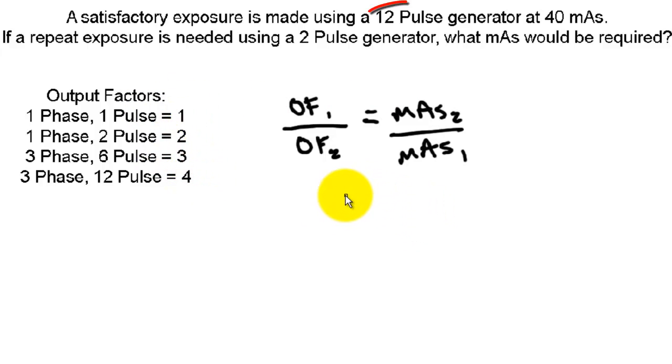Now, output factor 1, we're looking at a 12 pulse generator, so that would be 4. Output factor 2 was a 2 pulse generator, so that's going to be 2 equals mAs 2, we don't know, we're trying to solve for that, over mAs 1, which was 40.